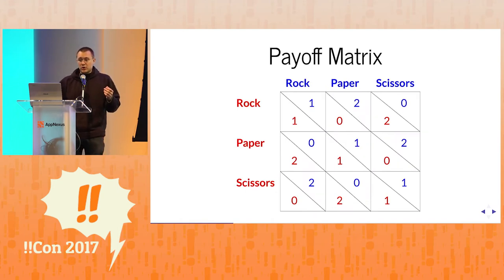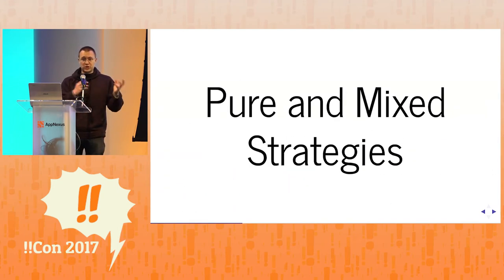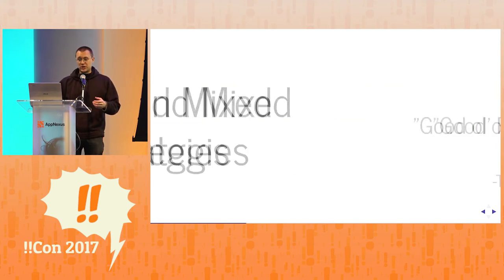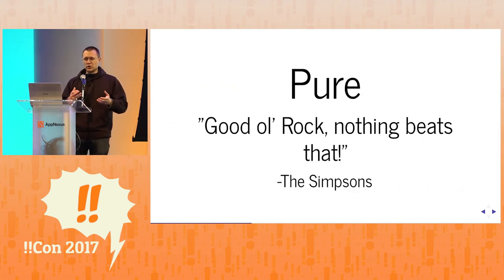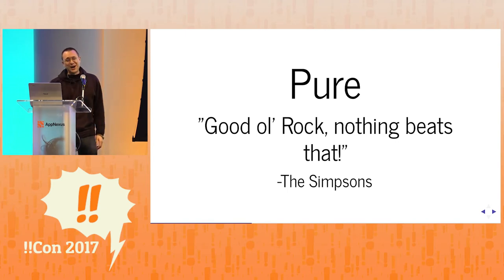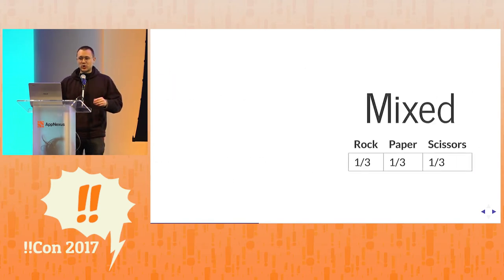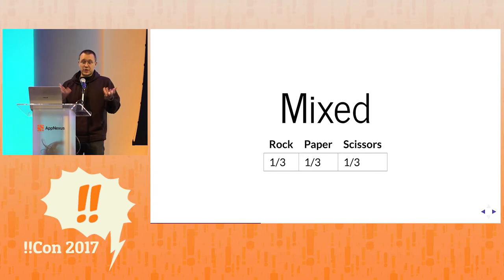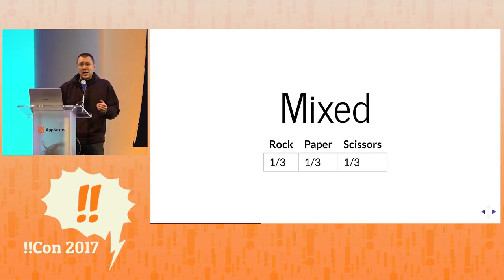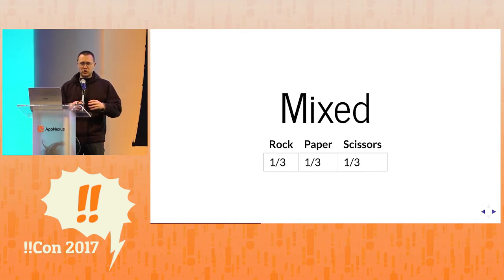In this sort of game there are two kinds of strategies: pure strategies and mixed strategies. Pure strategies are the ones where you just choose one thing and always go with it. Mixed strategies are, in this particular case, how you actually want to play — you have some percentage of each of the options. We all know when we're actually playing rock, paper, scissors that we do not choose the always-rock strategy.